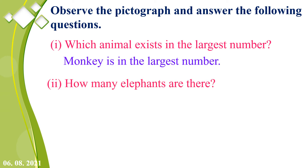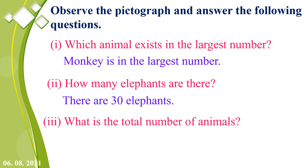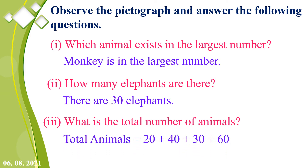Second: how many elephants are there? Elephants have 3 pictures, so 3 into 10 equals 30 — there are 30 elephants. Third: what is the total number of animals? Tiger: 20, deer: 40, elephant: 30, monkey: 60. So 20 plus 40 plus 30 plus 60 equals 150 animals.